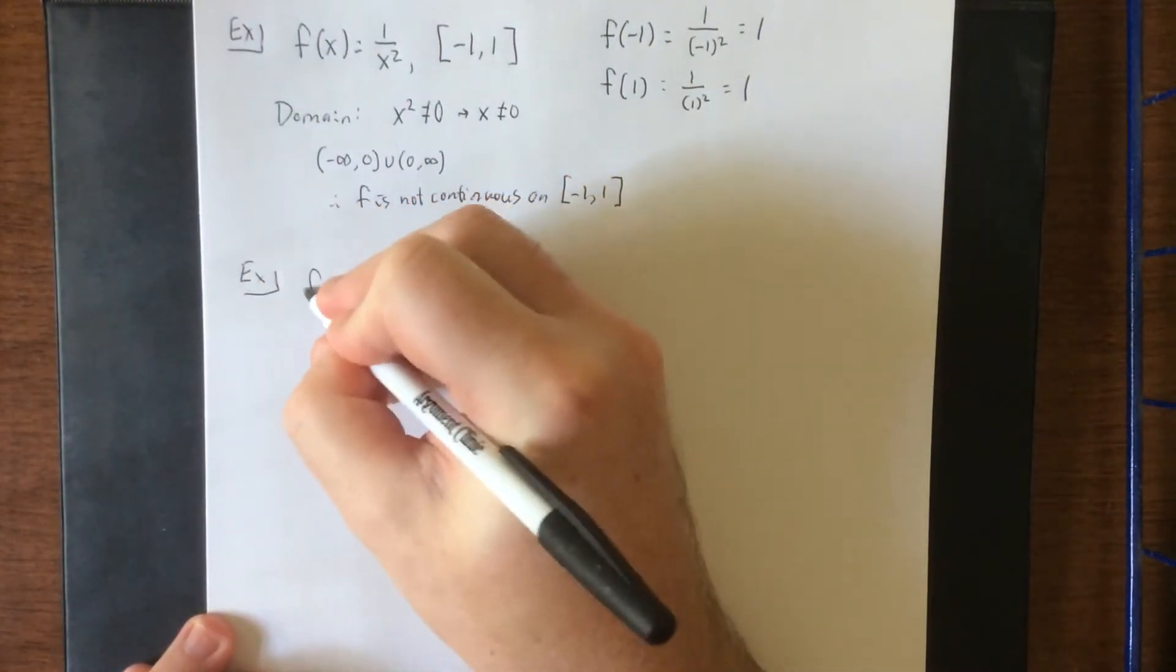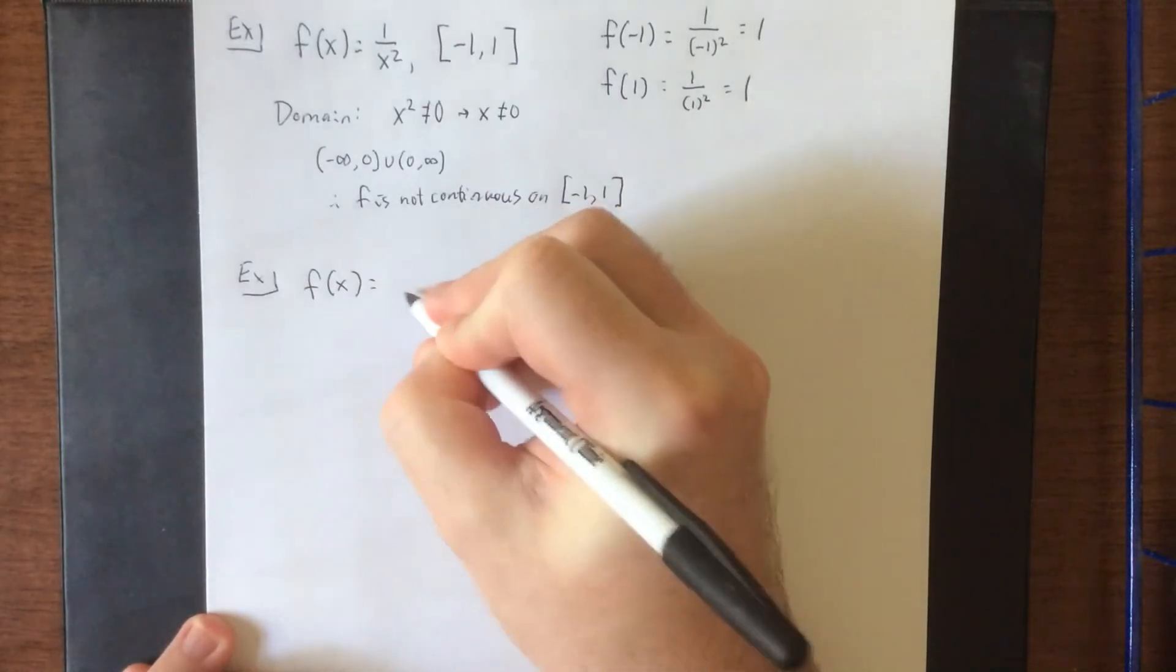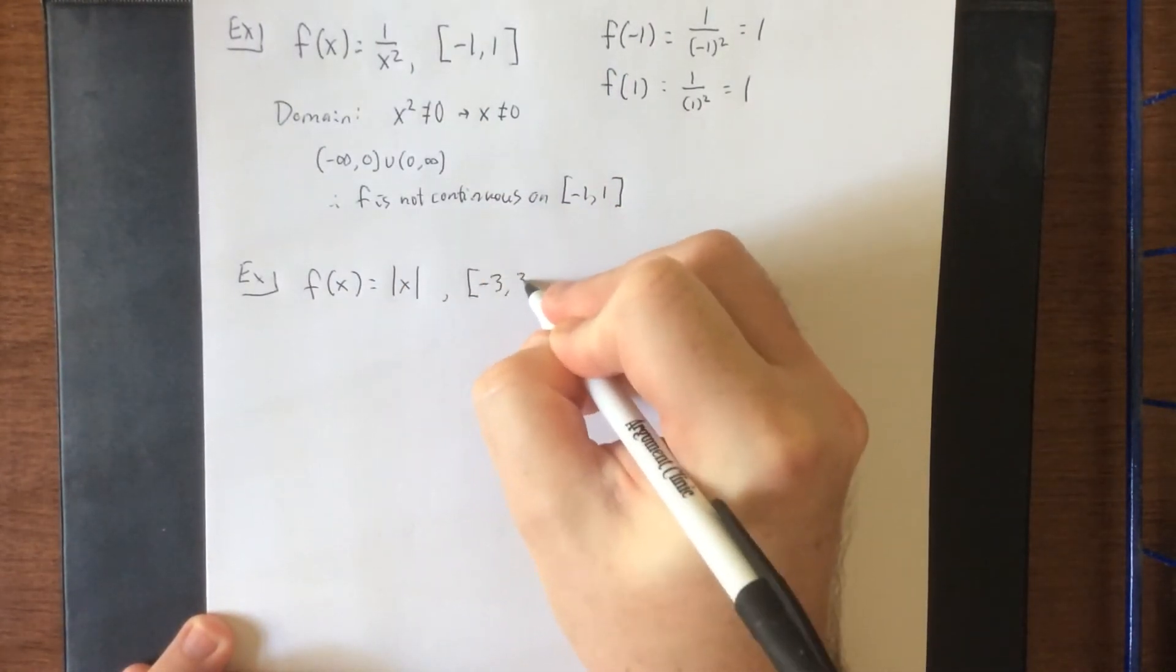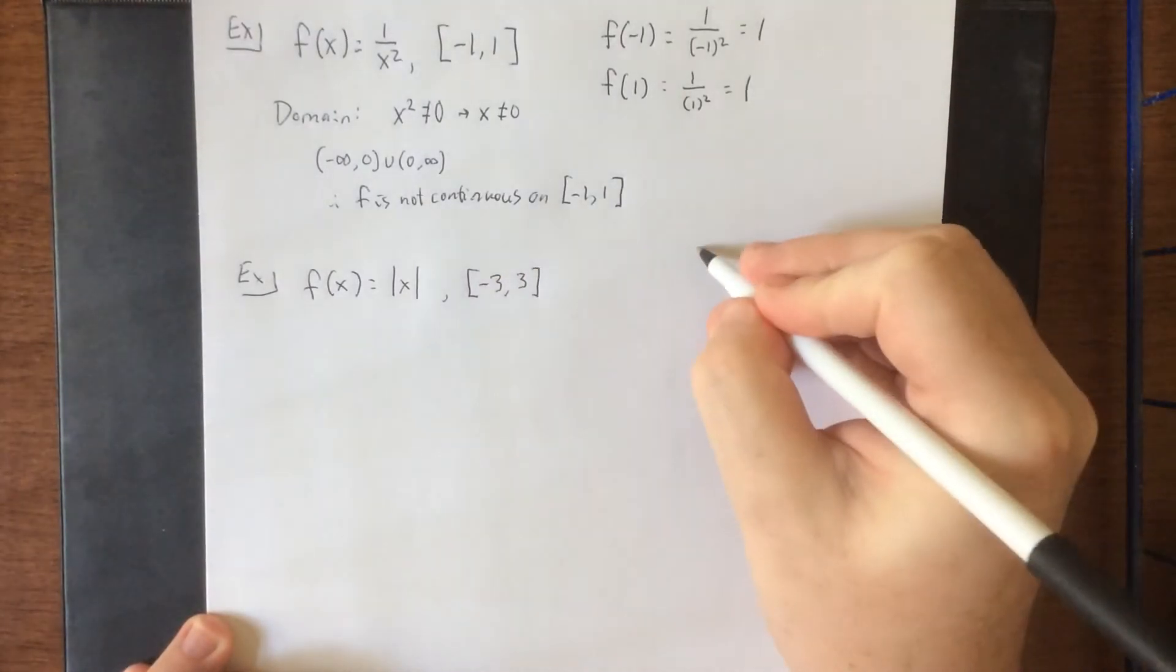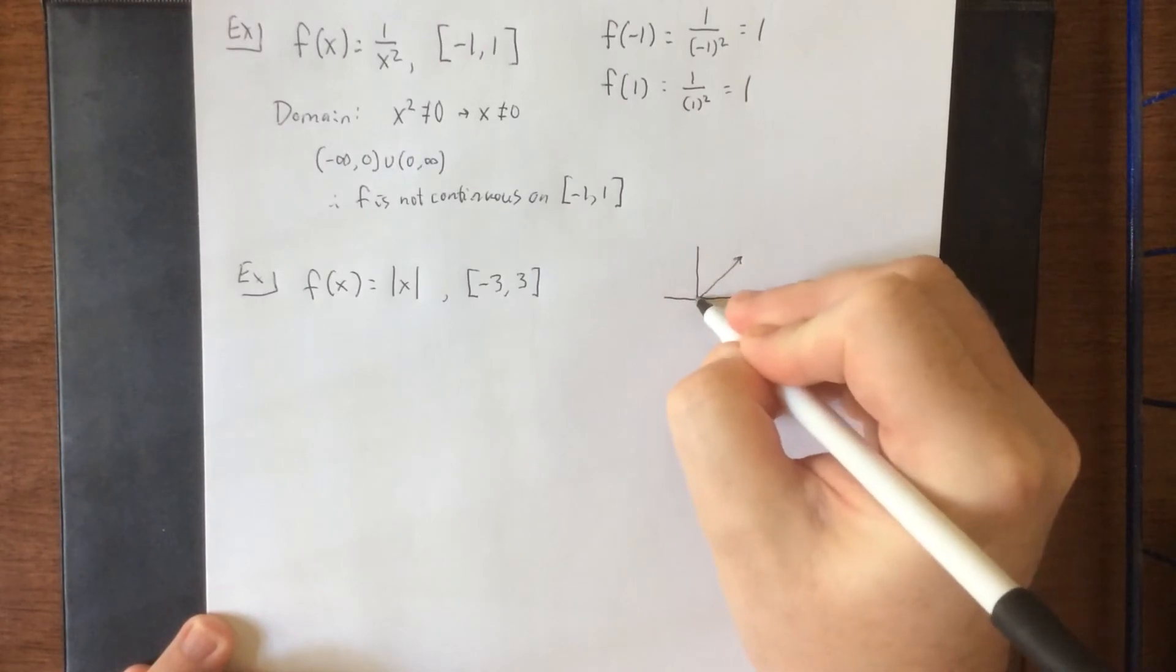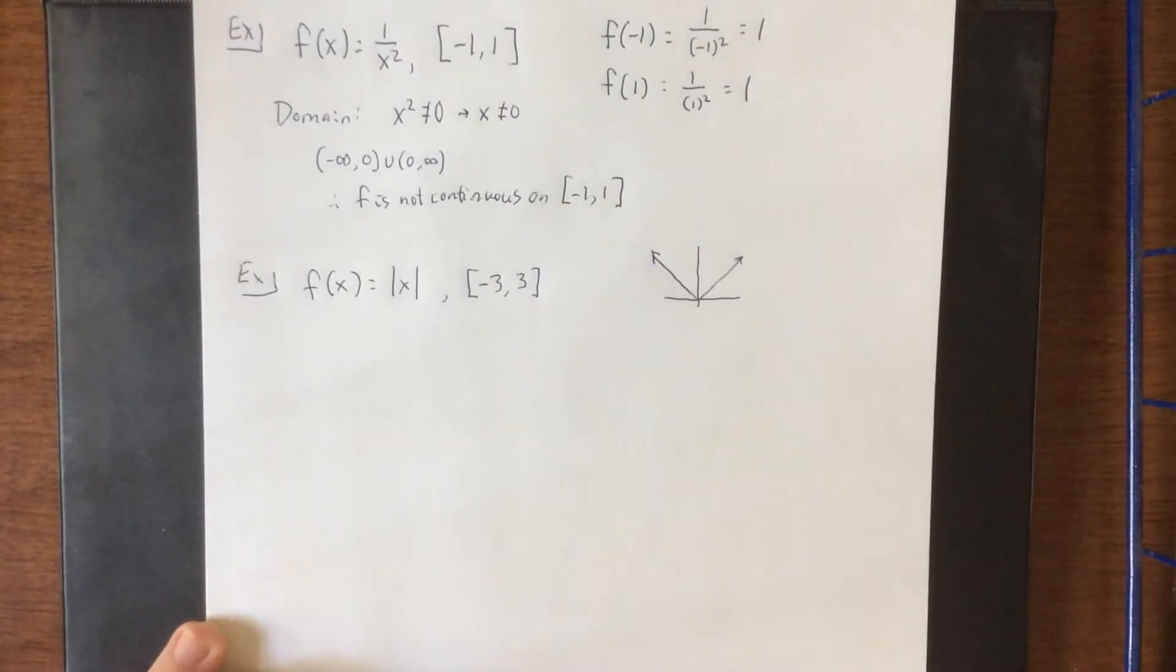A similar logic works if we want to talk about the function f of x is equal to the absolute value of x on the closed interval from negative 3 to 3. I would imagine the majority of you know what the absolute value function looks like, something like this.